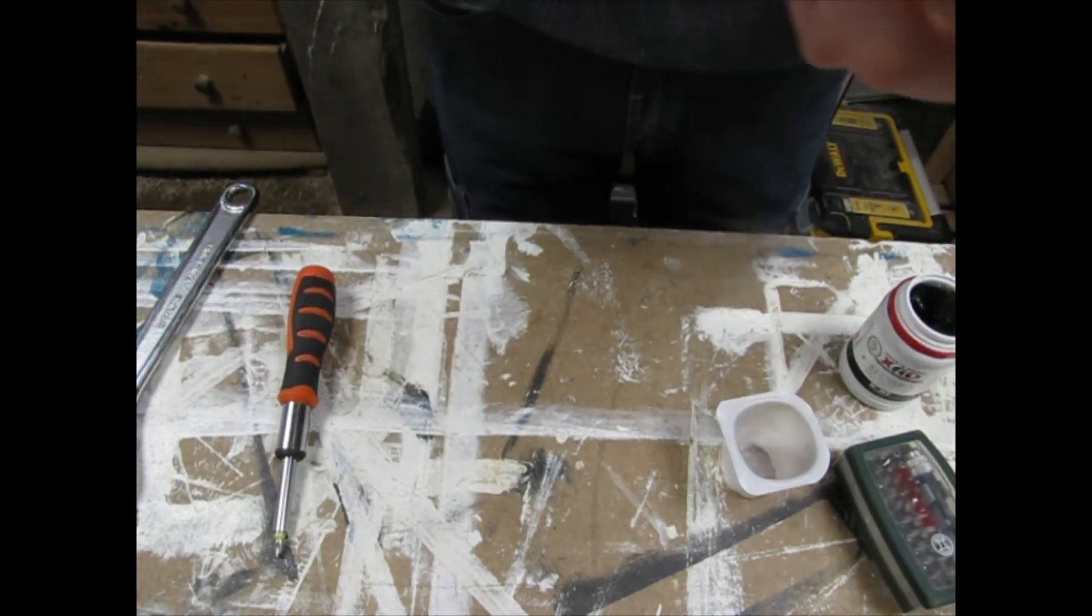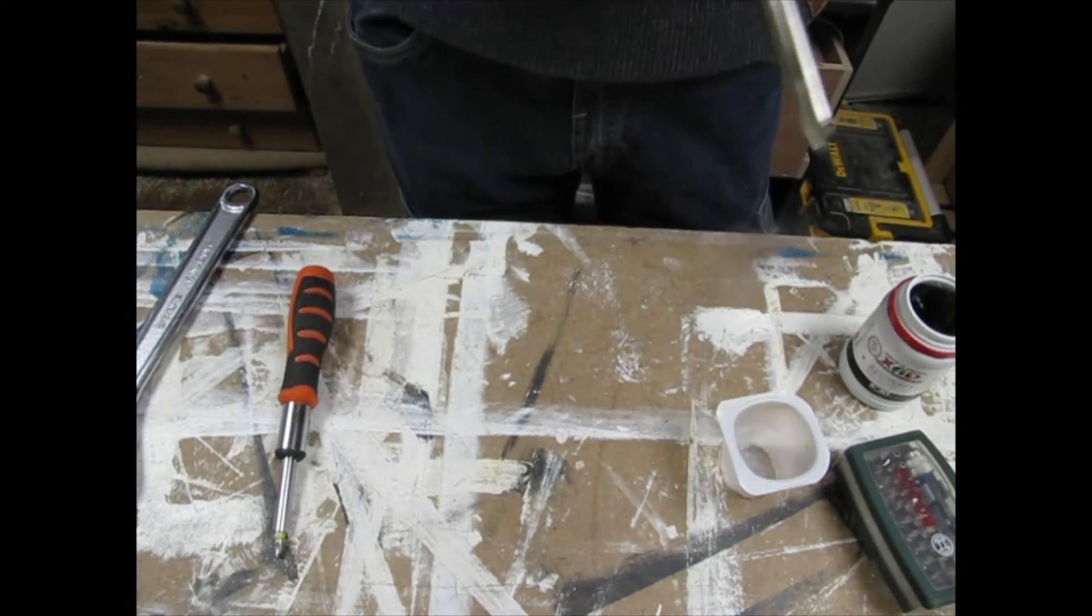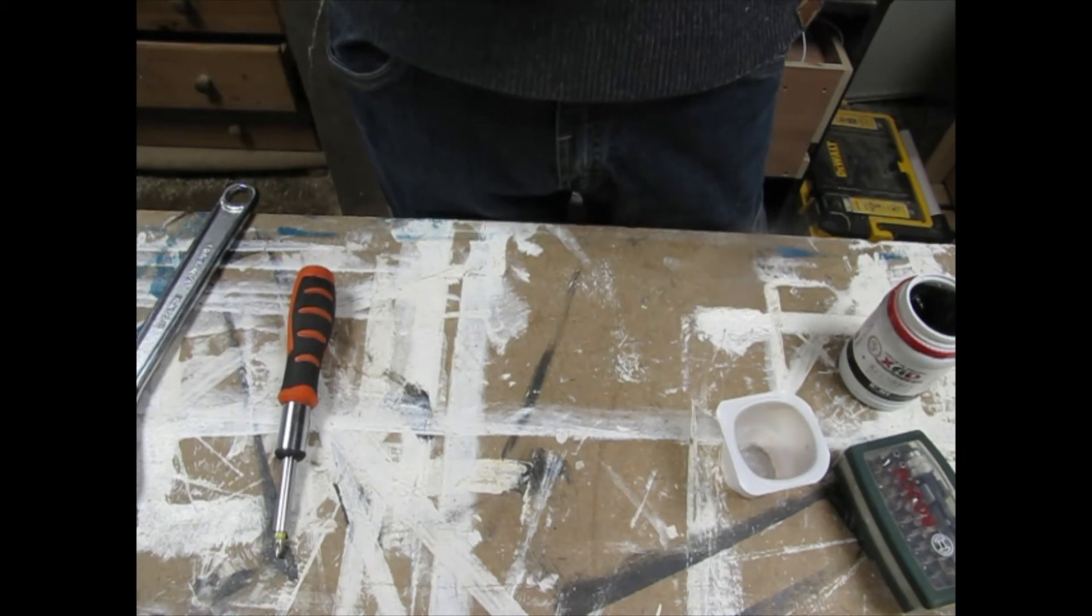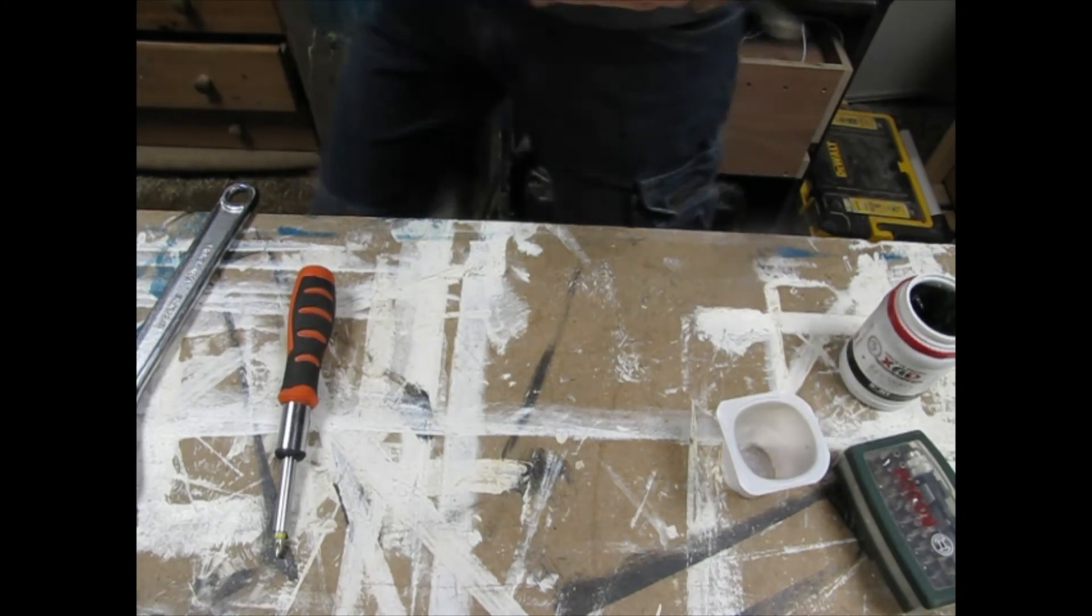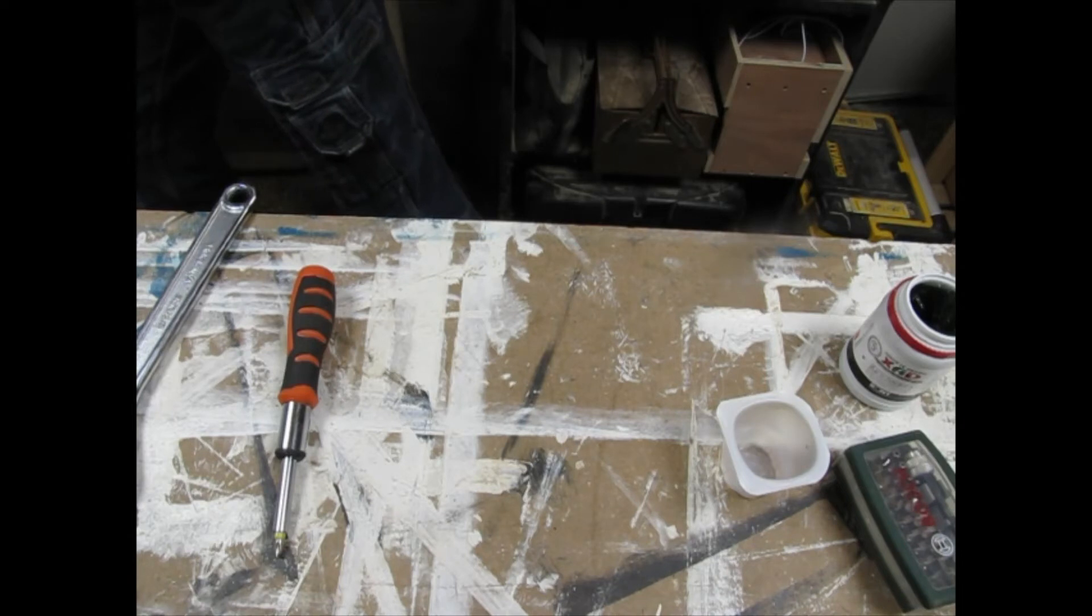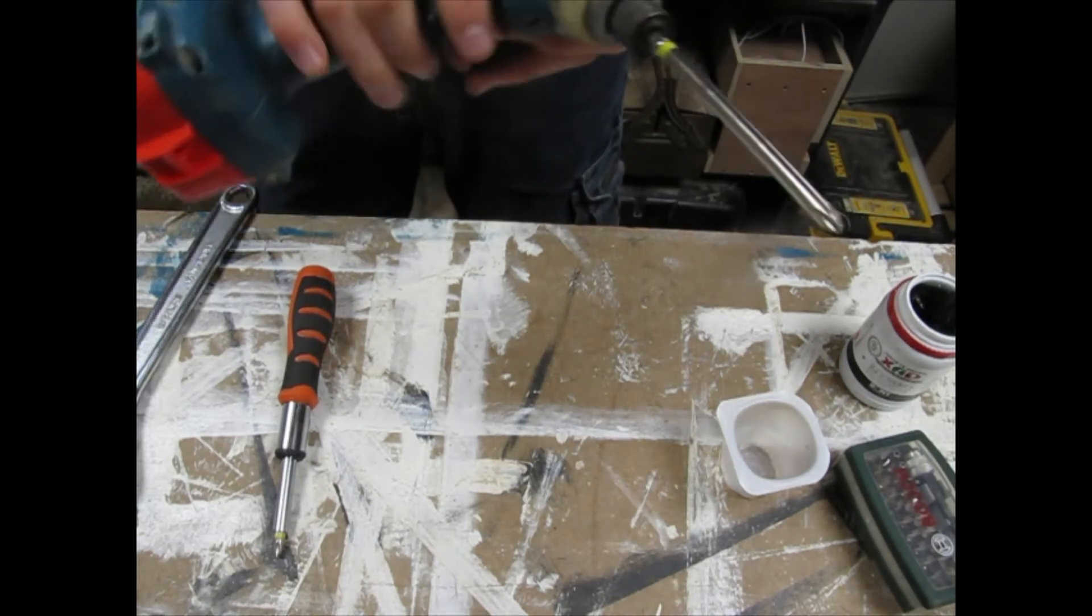Then just put this thing back on, the glow in the dark ring. Make sure it lines up properly. Like that.